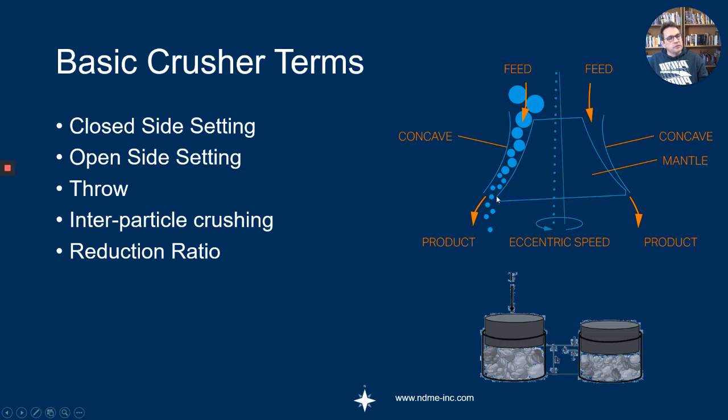The closest the mantle is to the concave is called the open side setting—basically the rocks fall through there. On the other side, where it's the closest, is called the close side setting, and that change in motion is called the throw.